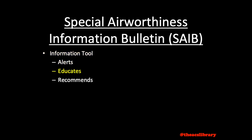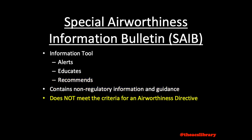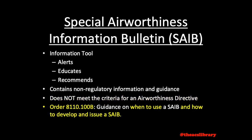A Special Airworthiness Information Bulletin is an information tool that alerts, educates, and makes recommendations to the aviation community. Special Airworthiness Information Bulletins contain non-regulatory information and guidance that does not meet the criteria for an Airworthiness Directive. Guidance on when to use a Special Airworthiness Information Bulletin and how to develop an Issue 1 is provided in Order 8110.100.